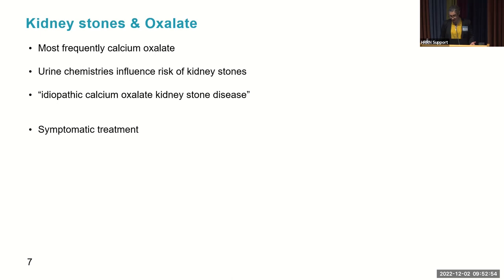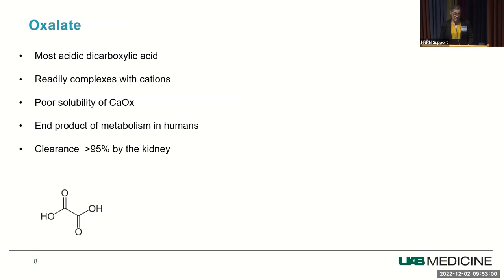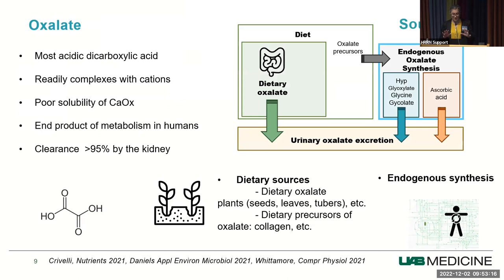Oxalate is the most acidic dicarboxylic acid and readily complexes with gut ions. Calcium oxalate salt is poorly soluble. In humans, oxalate is an end product of metabolism and is almost entirely cleared by the kidney. Oxalate comes from two big groups: diet and endogenous production. Dietary sources include dietary oxalate found mostly in plants — seeds, leaves, and tubers — and dietary precursors such as collagen. Endogenous synthesis involves a number of precursors including ascorbic acid and precursors linked to glyoxylate metabolism, which is a direct precursor to oxalate.